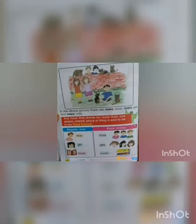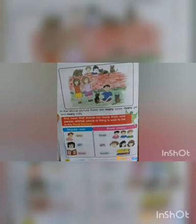Children, take page number 24. In this page, look at this picture. Here, there are many cats — 1, 2, 3, 4, 5 cats — and 3 boys and 2 girls. In the above picture, there are many boys, many girls, and many cats. Any noun that stands for more than one person, animal, place or thing is said to be plural number.